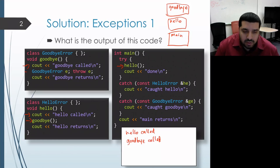Then on the next line, what we do is we default construct a goodbye error object and then we throw that. So that pauses the normal flow of execution. The rest of goodbye doesn't actually get executed.